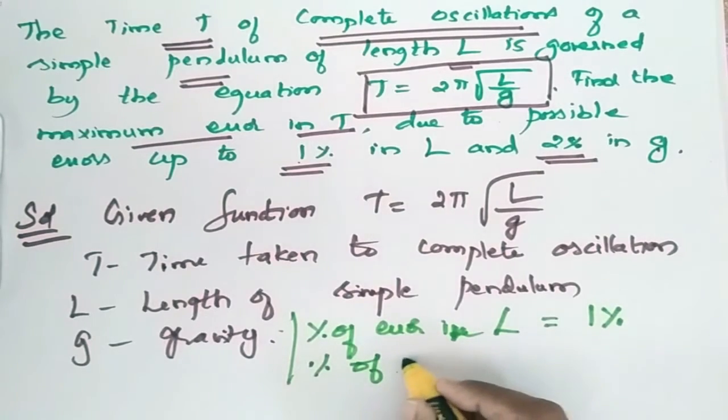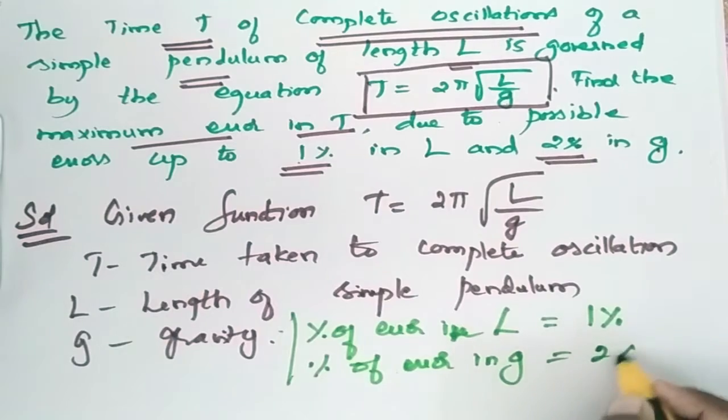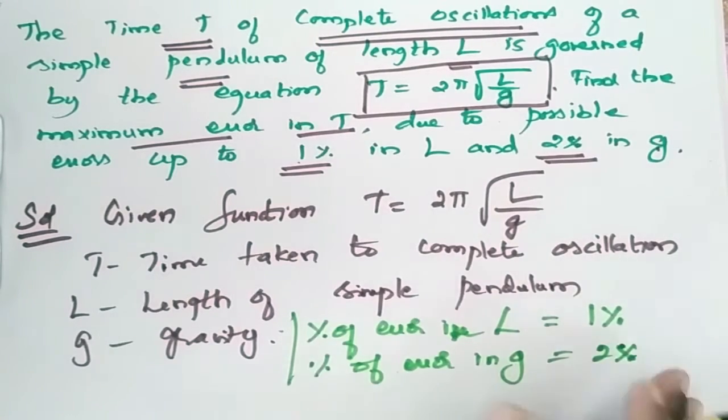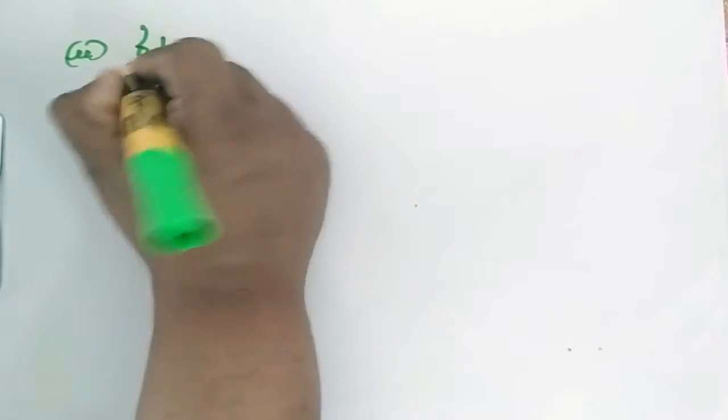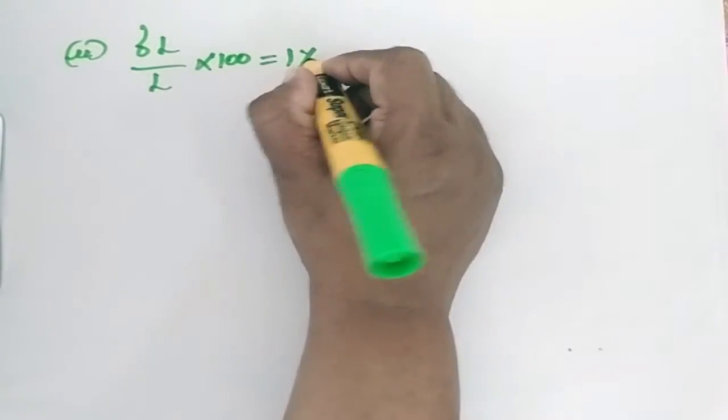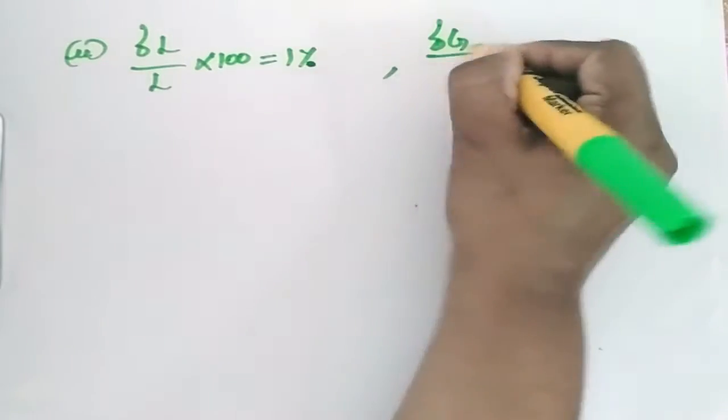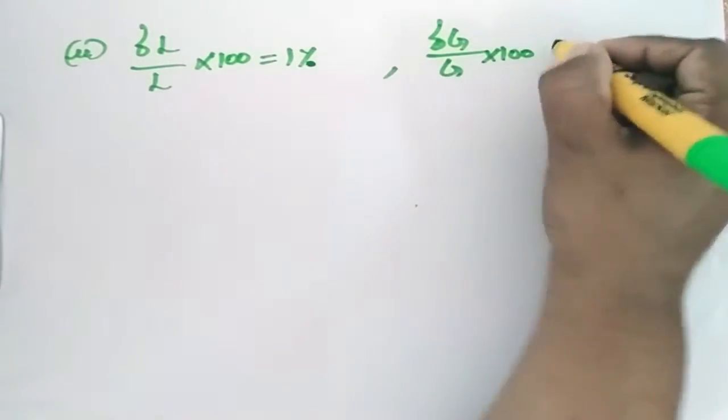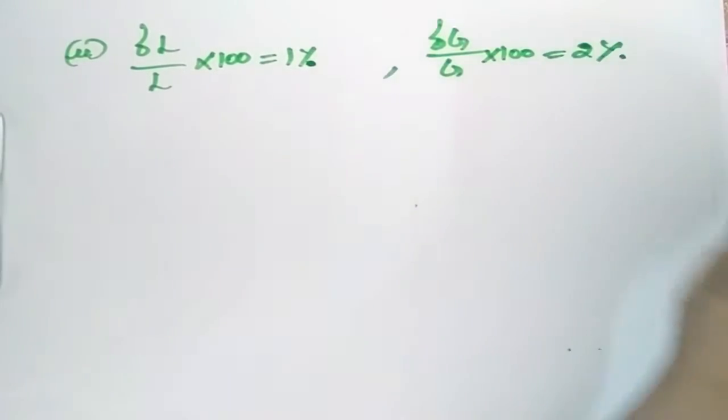Percentage of error in g is equal to 2%. Therefore ΔL/L × 100 = 1% and Δg/g × 100 = 2%.